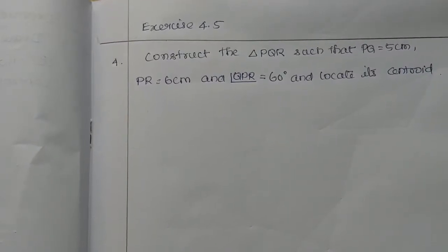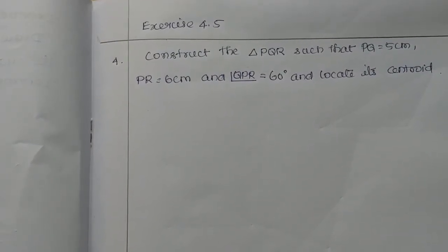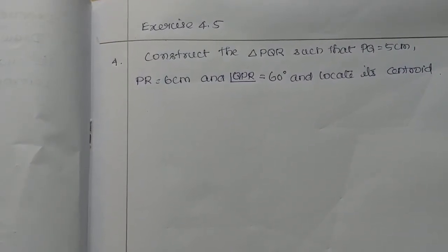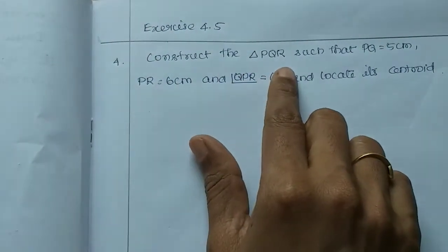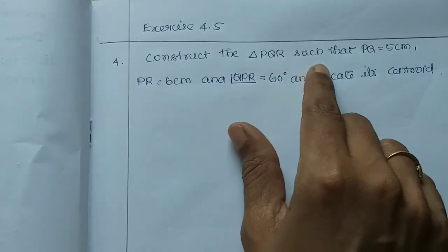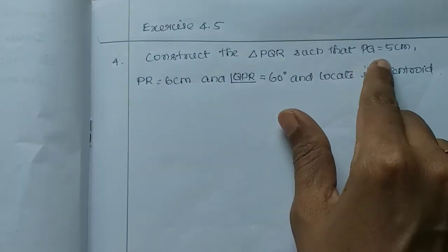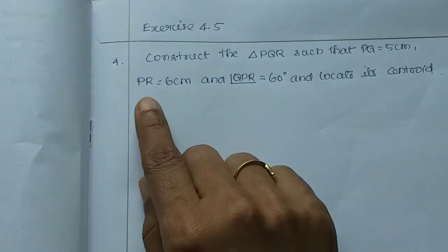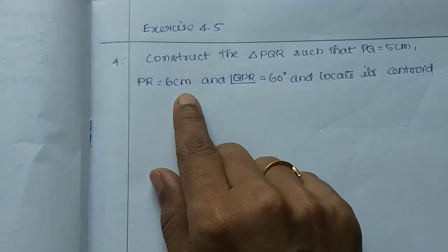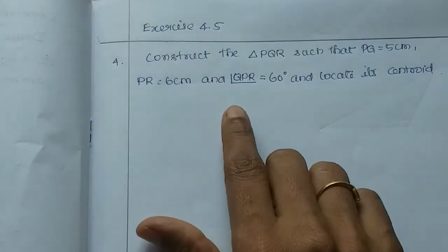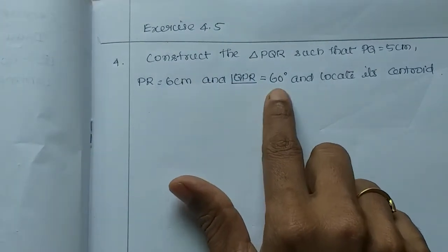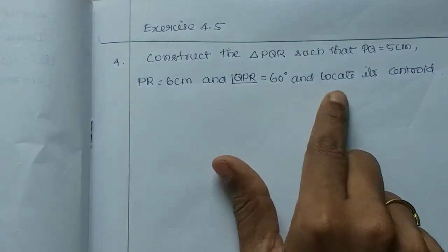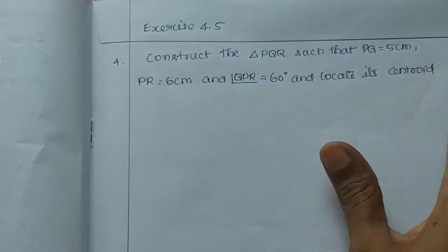Students, in this video we are going to look at 4.5. Construct the triangle PQR such that PQ is equal to 5cm, PR is equal to 6cm, and angle QPR is 60 degrees, and locate the centroid.